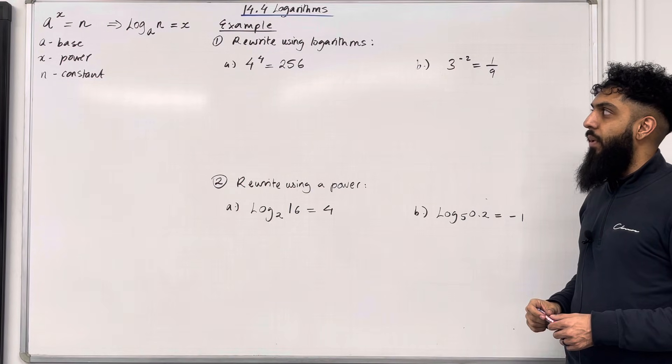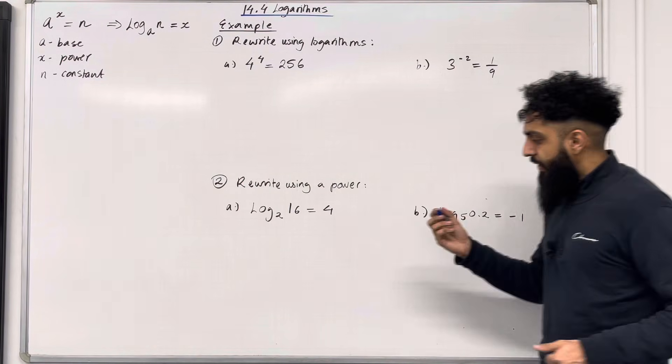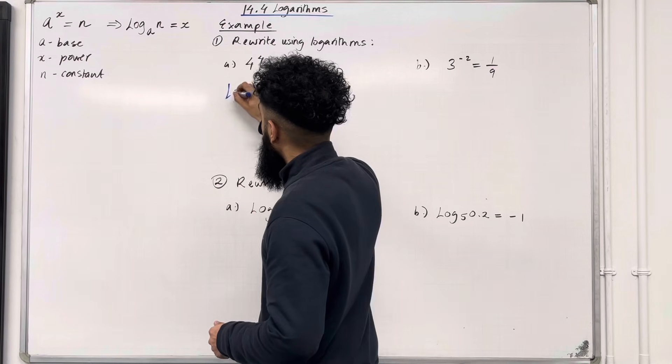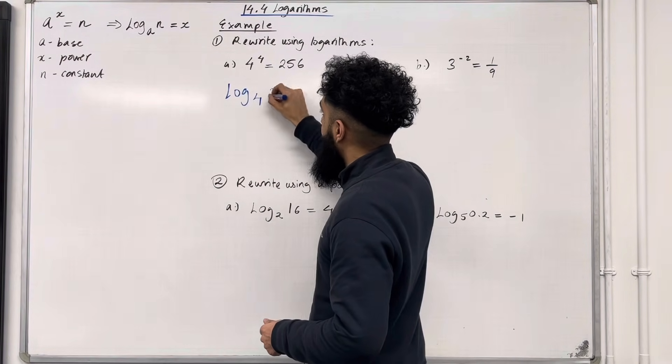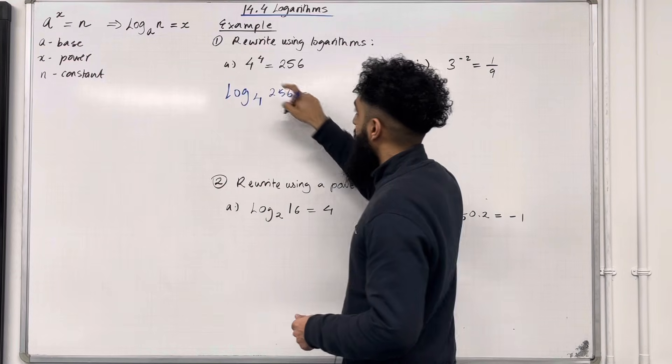Part A, 4 to the power 4 equals 256. So over here, we have log to the base of 4 of 256 is equal to the power 4.